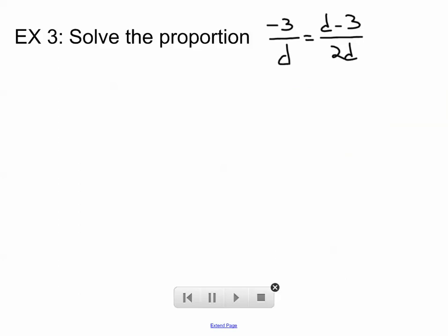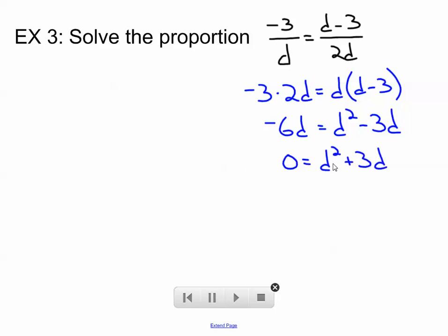Okay, here's another one, and this one's even a little bit more different. Hopefully you're looking at this quantity, D minus 3, and wondering how that affects it. Well, let's do cross-products. Negative 3 times 2D should equal D times D minus 3. Notice the D minus 3 in parentheses, and that's how we need to treat those quantities all the time. Simplify both sides. Distributed property on the right.